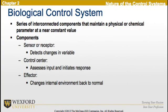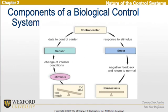Biological control systems are a series of interconnected components that maintain a physical or chemical parameter at a near constant value. Those components can involve a sensor or receptor, which detects changes in the variable; a control center, which assesses input and initiates a response; as well as an effector that changes the internal environment back to normal. In this diagram, we can see that we either have too much or too little of a stimulus, leading to a change in internal conditions. A sensor senses the difference and leads data to the control center, which responds to the stimulus, leading to an effect and negative feedback, returning to homeostasis.